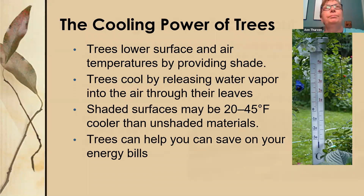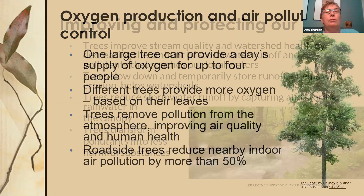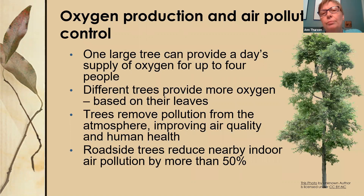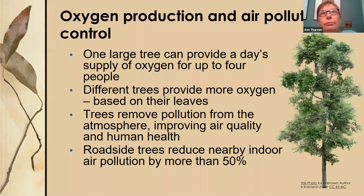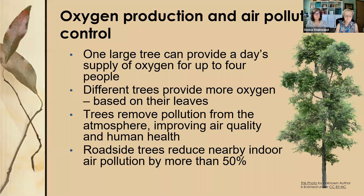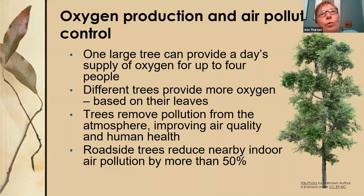Next, trees produce oxygen. We often think about plants producing oxygen, but we don't always think about trees as really big plants. One tree can produce enough oxygen for four people each day — trees produce nearly 260 pounds of oxygen each year. Not all trees produce the same amount of oxygen; it's not just the size but the type of tree that makes a difference. Pines are at the bottom of the list in terms of oxygen release because they have a low leaf area index.